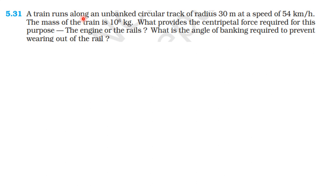A train runs along an unbanked circular track of radius 30 m at a speed of 54 km/h. The mass of the train is 10⁶ kg. What provides the centripetal force required for this purpose — the engine or the rail? What is the angle of banking required to prevent wearing out of the rail?